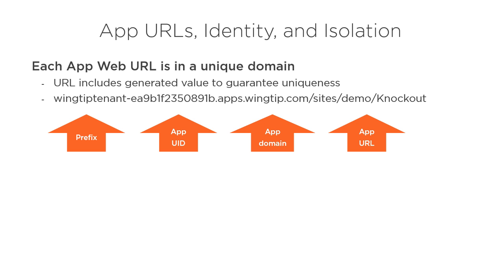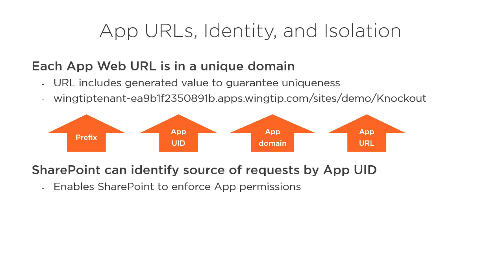The values used for the prefix and the app domain are part of the app configuration mentioned earlier in this module. It's important to reiterate that the fact that each app web has a unique domain has nothing to do with where the app is stored in SharePoint. Unless you've done a tenant-scope deployment — which is rare — the app web is a child site of the host web. We'll talk about tenant-scope deployments towards the end of the course.